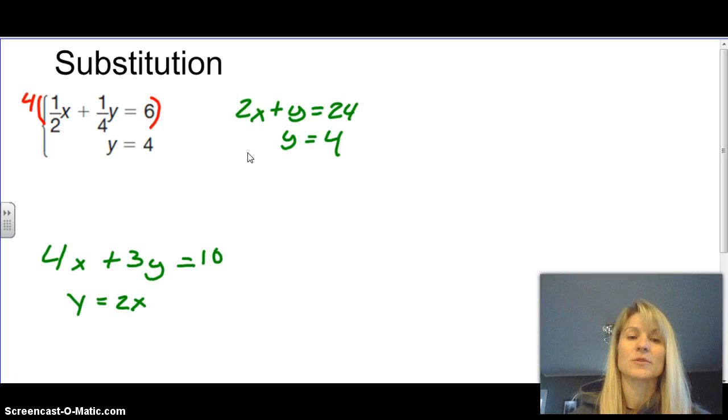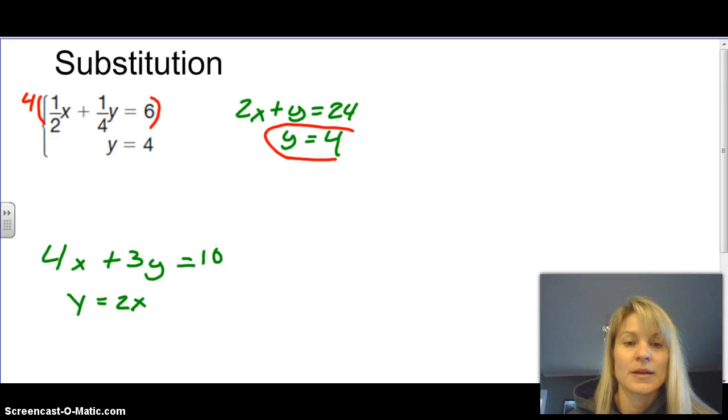Hopefully you remember y equals four is a horizontal line. So when you have something like this, substitution is going to be a great solution opposed to graphing. Because right here, this says y equals four. So what I can do is I can substitute this four in for y, because down here is telling me that y is the same thing as four. So I can just make this 2x plus, instead of y, I'm going to plug in four, equals 24.